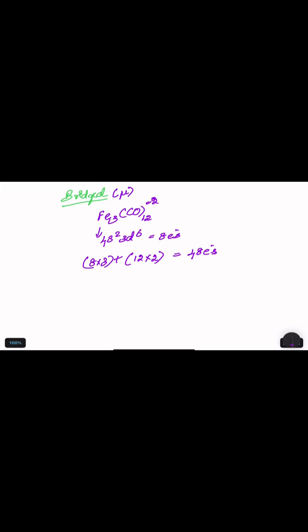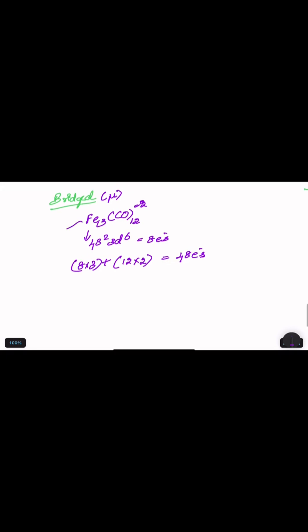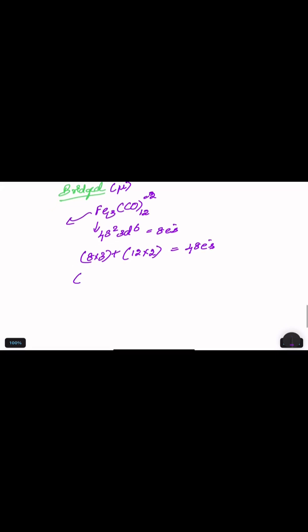Now, what is the procedure needed for a stable compound? Each metal should have 18 electrons. Here, 3 metals are present, so 3 × 18 = 54 electrons should be present for the complex to be stable. But what we have is only 48, so we subtract to check how many electrons we need for stability.